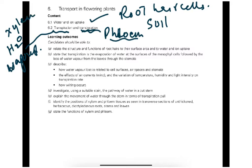Looking at the general overview, there are two investigations in this chapter. One is the effects of air currents and the variation of temperature, humidity and light intensity on the rate of transpiration. These are the two practicals we have to understand. We also need to understand the position of the xylem and phloem and their functions.